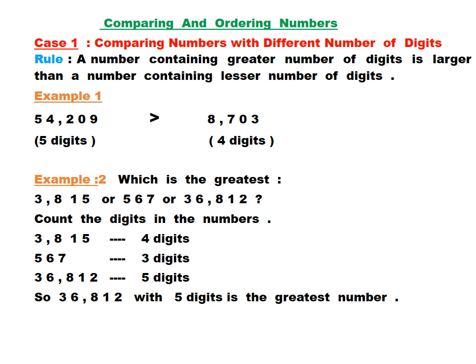In this topic there are two cases. Let us discuss both cases one by one. Case number one: comparing numbers with different number of digits. The rule says a number containing a greater number of digits is larger than a number containing a lesser number of digits.